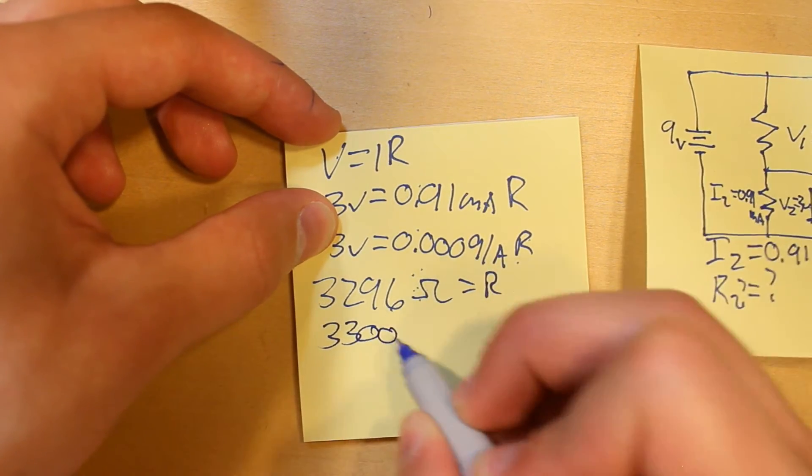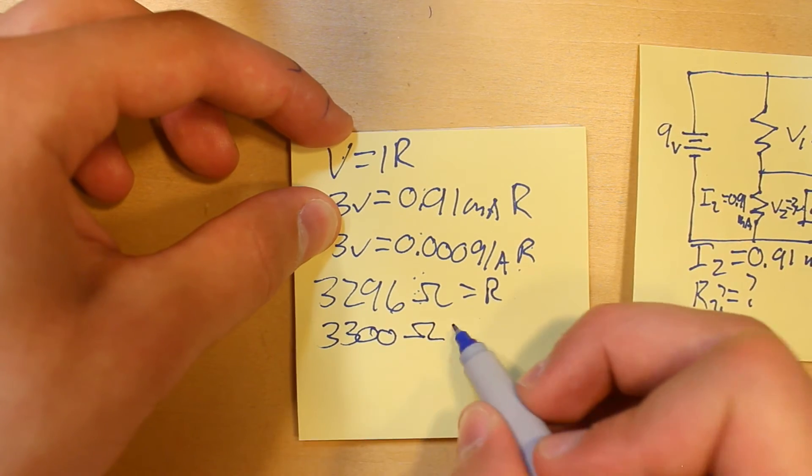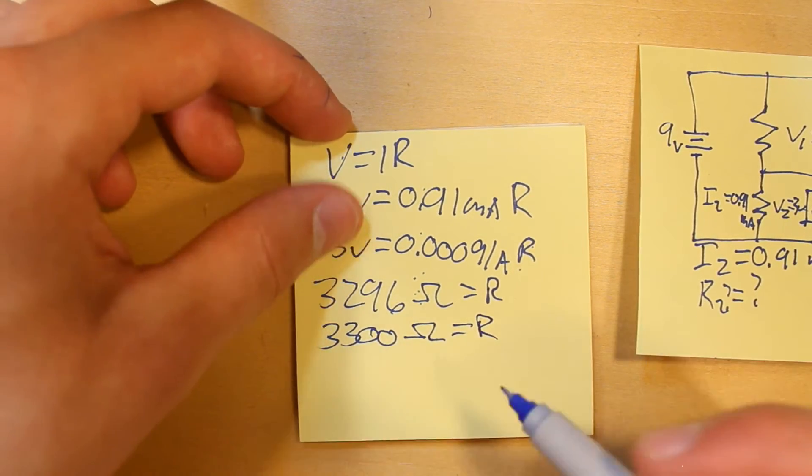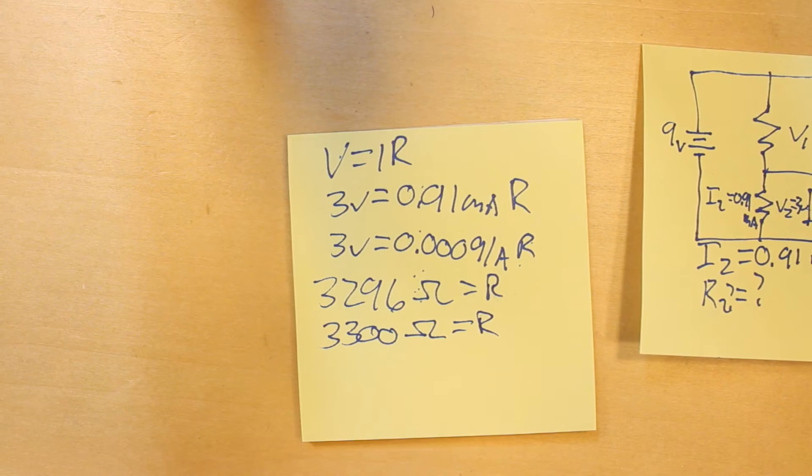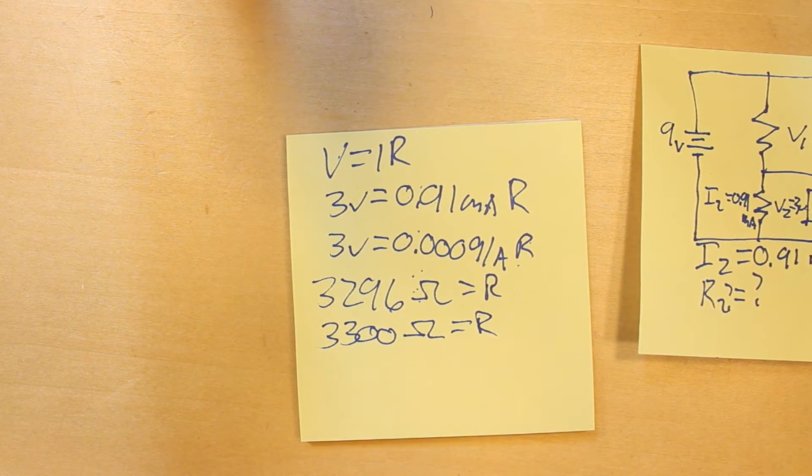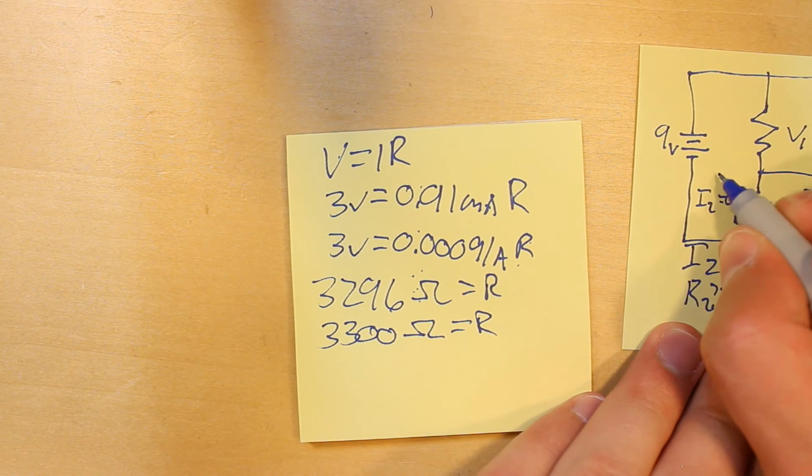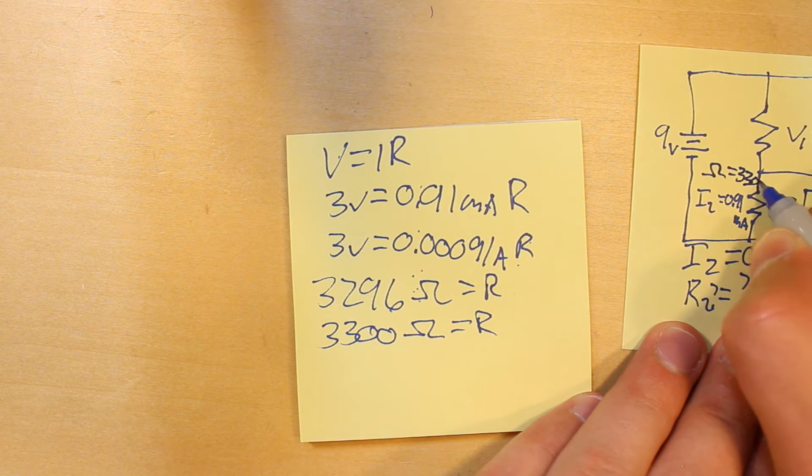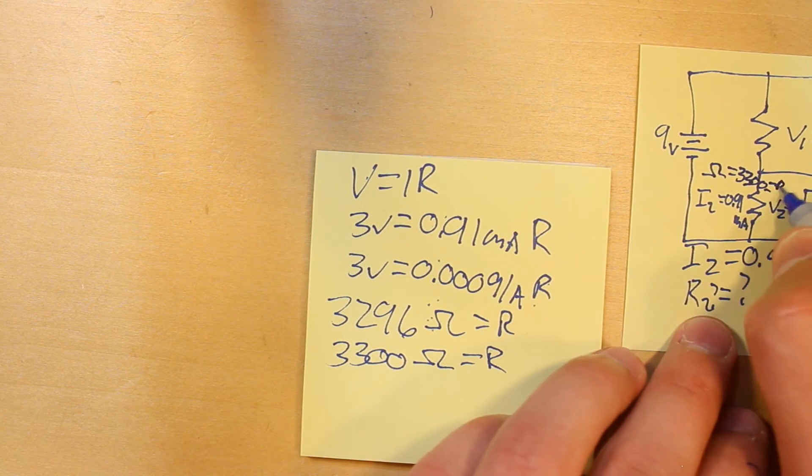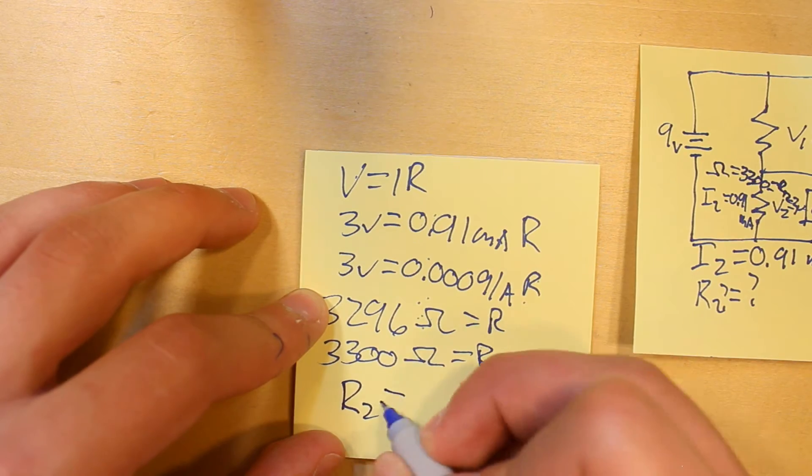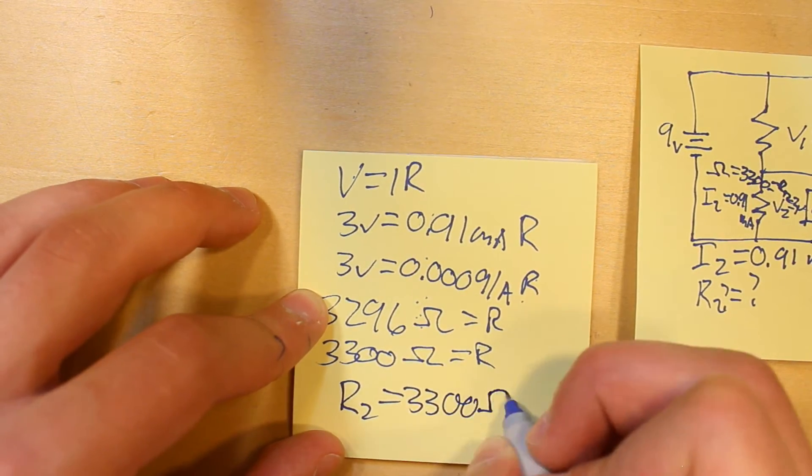Now, resistors don't actually exist in this value. They exist more in 3,300 ohms, which is fine, because it's only 4 ohms off. Even 200 ohms off wouldn't be a big deal for something like this. So, we know that this R needs to be 3,300 ohms. R2 equals 3,300 ohms.